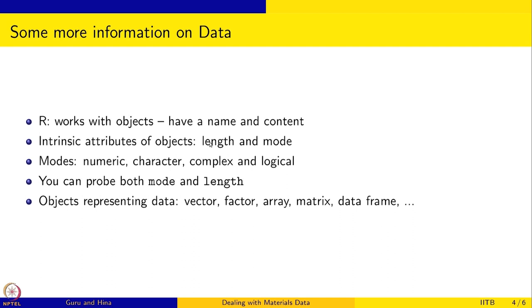Objects have intrinsic attributes like length and mode. You can ask for the length of an object and it will tell you its size. The mode indicates whether it is numeric, character, complex, or logical — like true or false. You can use both the mode and length commands to probe the intrinsic attributes of any given object.